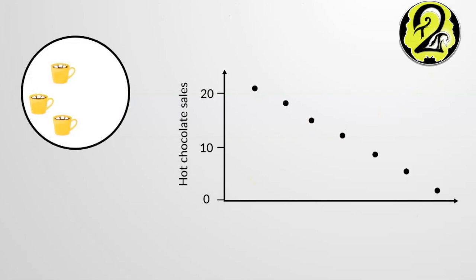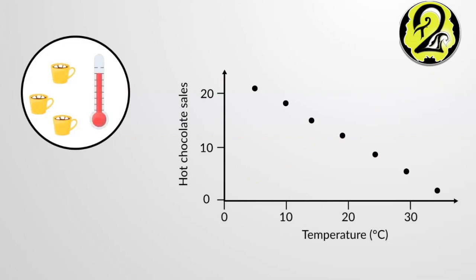Now, consider the scatter plot of hot chocolate sales as a function of temperature. The data points in this case also have a linear pattern, and hence have a correlation. But hot chocolate sales decrease with the rise in temperature, so the variables have a negative correlation.